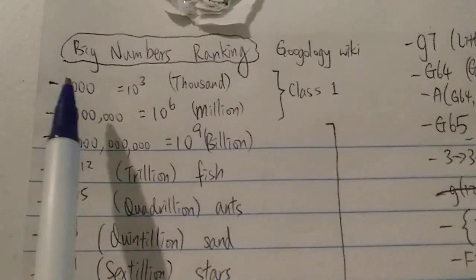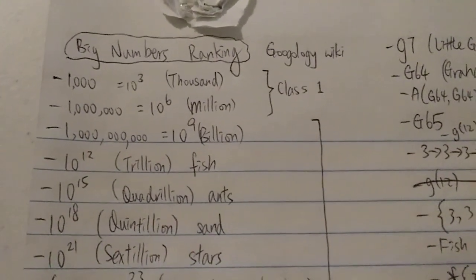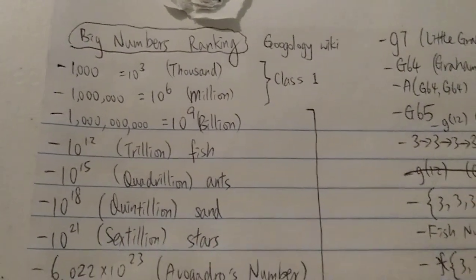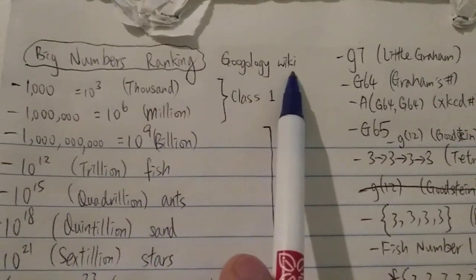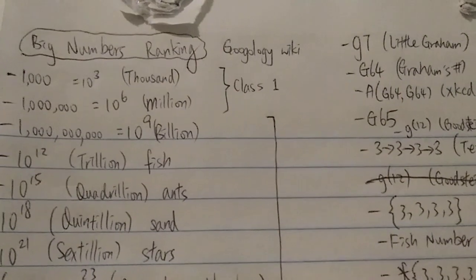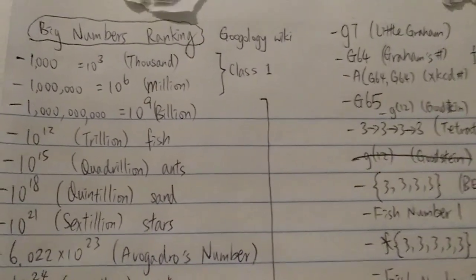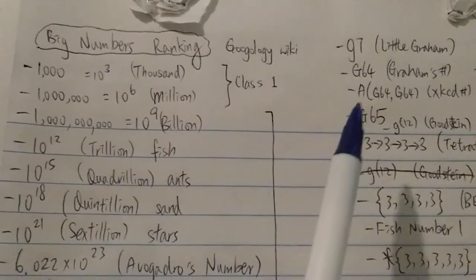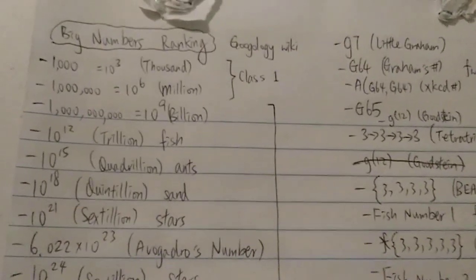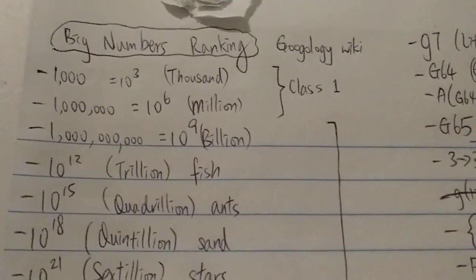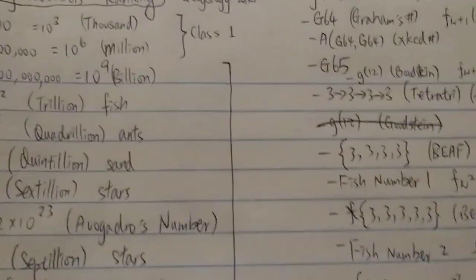Today I want to make an update video on big numbers ranking. I've already made an older video on big numbers ranking but that was several years ago, so I want to make an update video with more numbers. This list is based from the Googology wiki, which has quite a popular collection of big numbers. This list doesn't include all the numbers — there are thousands on the wiki — so I'm only including the more famous ones.